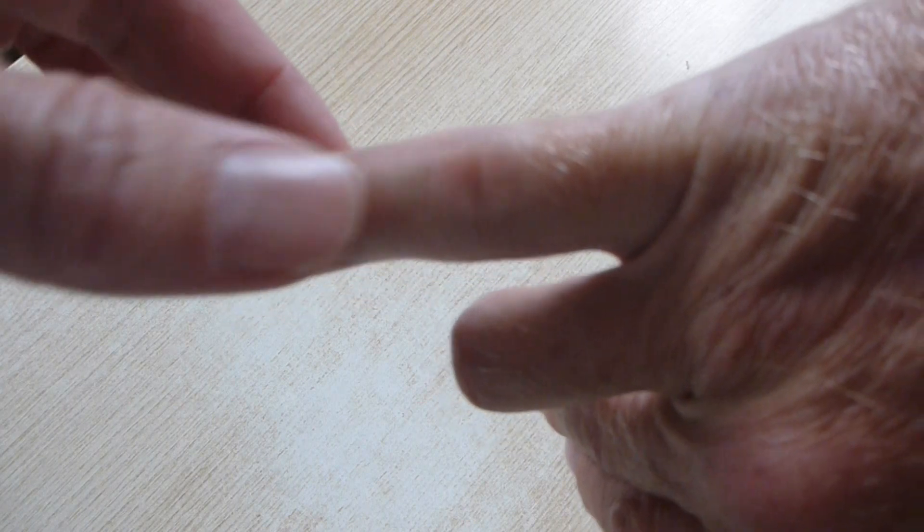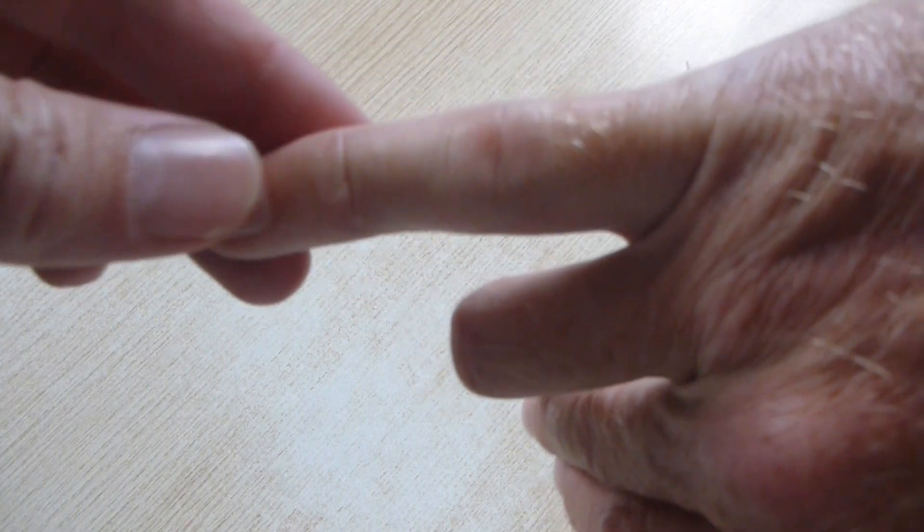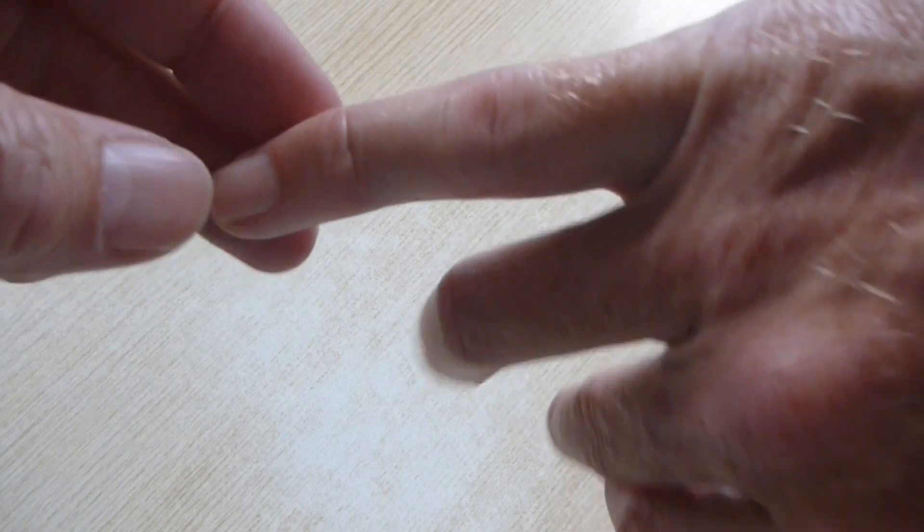I also get a lot of problems with this finger here, with my knuckle. I get a lot of pain in there, and that wasn't through fracture or anything. It's just general pain from grabbing the gi, and when the gi gets pulled out of your hand...